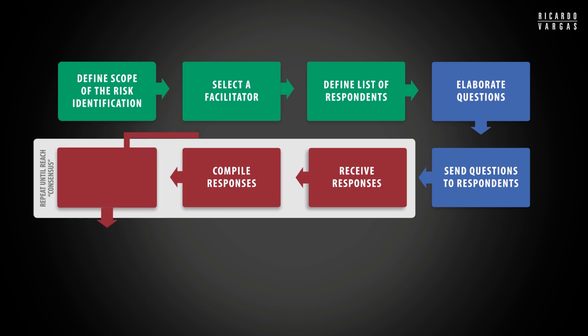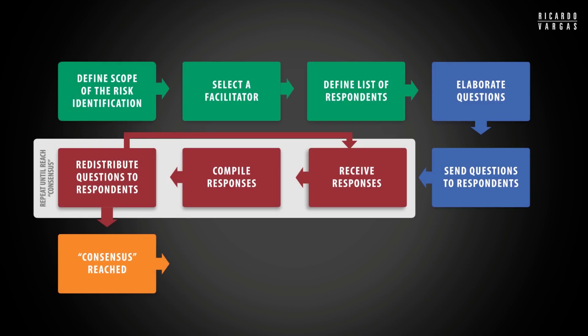Then there is the tricky point — you return back all the answers anonymously. For example, suppose John says the problem is that the marketing area is not acting proactively, and Anna from the marketing area says that operations is not delivering the product. You remove their names, so you say 'someone said this, someone said that.' Then John receives the criticism against his operations area, and Anna receives the criticism on the marketing area. People then comment on the feedback, and you repeat this loop until you reach some kind of consensus. Then you compile the list.